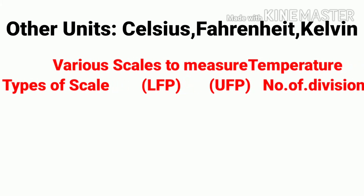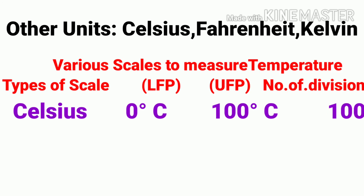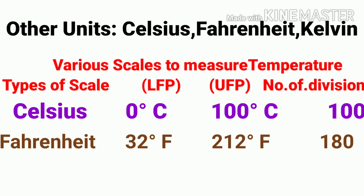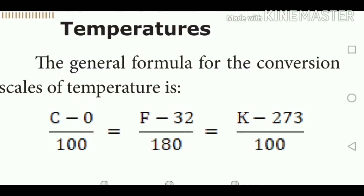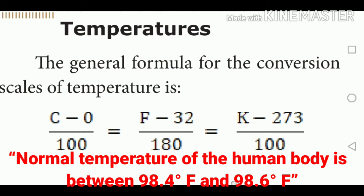There are various types of temperature scales. First, Celsius: lower fixed point 0°C, upper fixed point 100°C, number of divisions 100. Second, Fahrenheit: lower fixed point 32°F, upper fixed point 212°F, number of divisions 180. Third, Kelvin: lower fixed point 273 K, upper fixed point 373 K, number of divisions 100. The formula for conversion between scales is: (C − 0)/100 = (F − 32)/180 = (K − 273)/100.